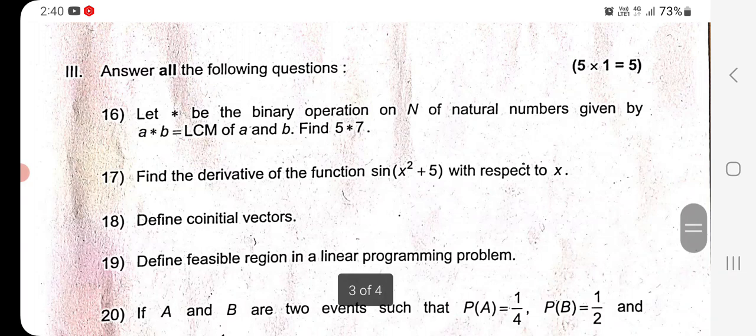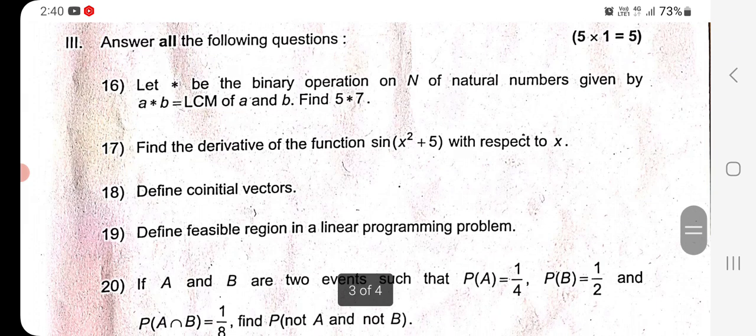Question 16: Let star be a binary operation on N of natural numbers given by A star B equals LCM of A and B. Find 5 star 7. The LCM of 5 and 7 equals 35. Question 17: Find the derivative of the function sin(X² plus 5) with respect to X. This is composition of two functions. First calculate the derivative of sin, which is cos. Cos(X² plus 5) and again differentiate X² plus 5. So the answer is 2X times cos(X² plus 5).